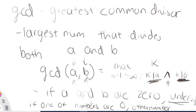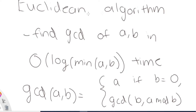Now we're going to talk about the Euclidean algorithm. The Euclidean algorithm is basically an algorithm that allows you to find the greatest common divisor of A and B in log of minimum of A, B time. So the time it takes to compute the GCD of A and B is the logarithm base two of the smaller of A and B. For example, if A is two and B is five, it would take log base two of two time, since two is the smaller number. We technically don't need to know that for competitive programming, but it's a fun fact.